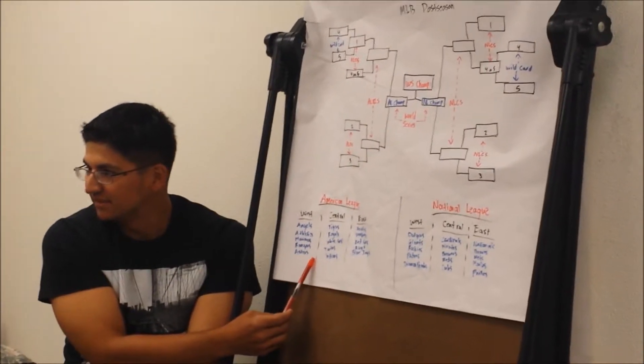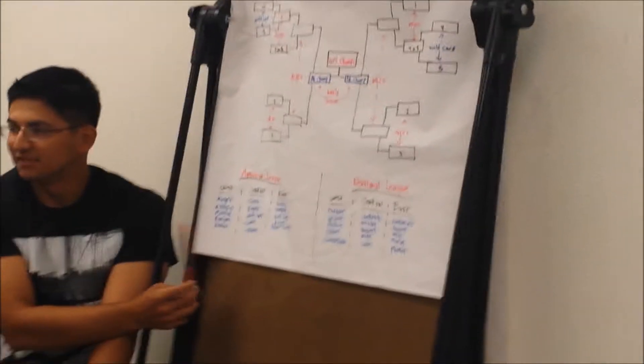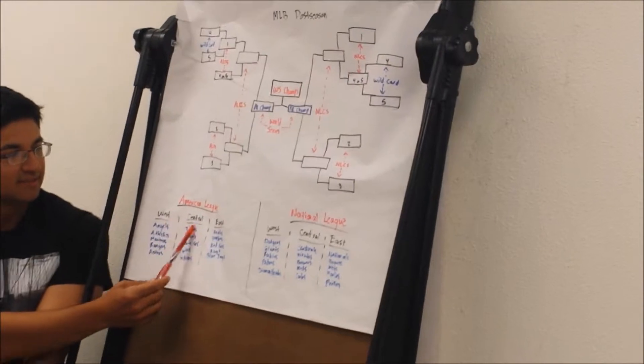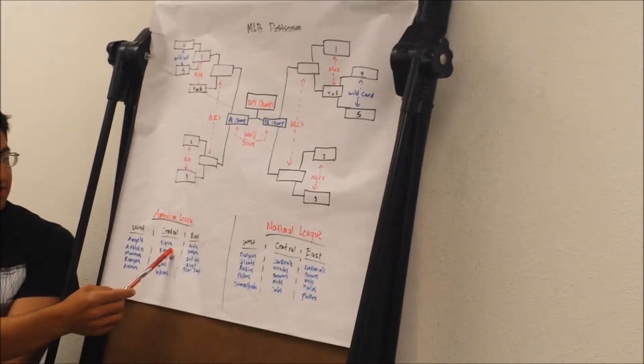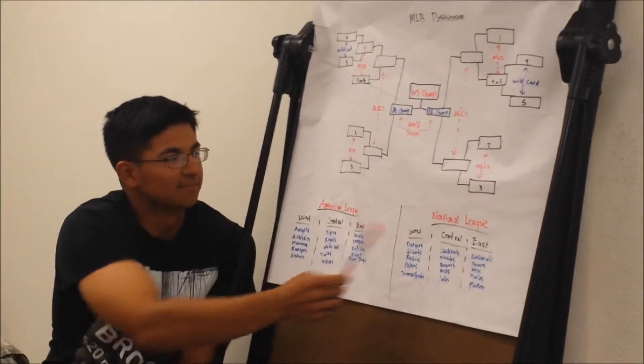Since each league has 15 teams, you break down those 15 teams into three divisions. You've got the West, the Central, and the East. Each division consisting of five teams for both leagues. It's the same thing.